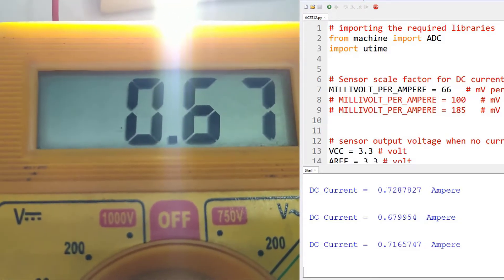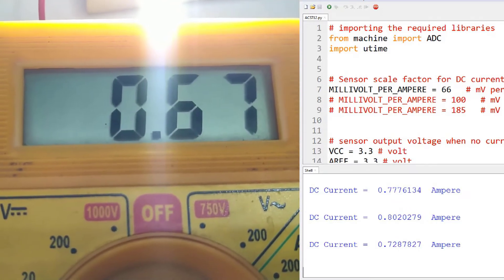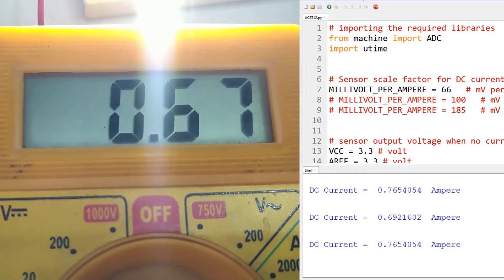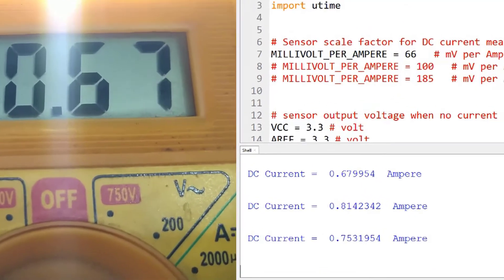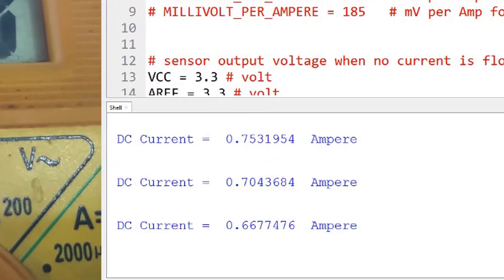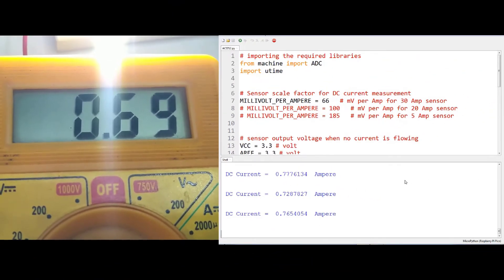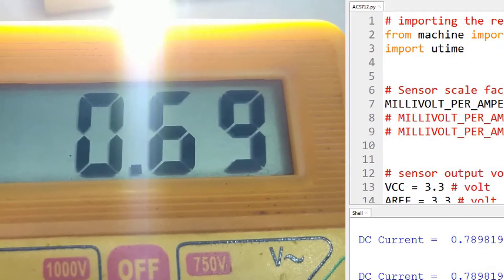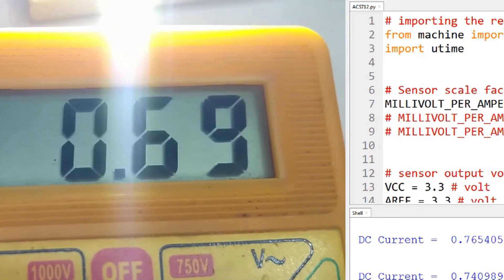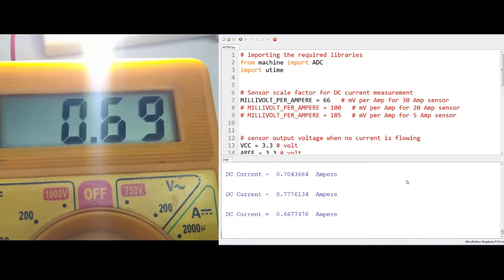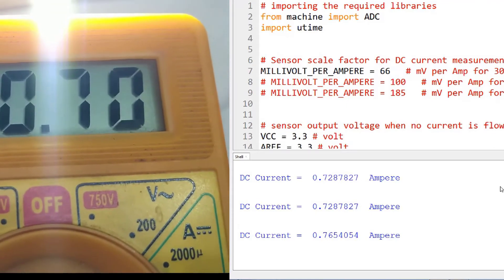From the multimeter you can see you are getting a constant 0.67 amperes of current consumption and from the Python shell you can see it is 0.7, 0.6, so values very much closer to it. Now you can see it is 0.7 in the multimeter and 0.72 in the Python console.